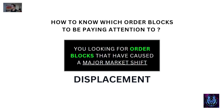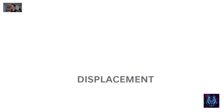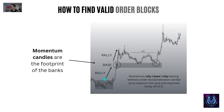You're looking for order blocks that have caused a major market shift — that's called displacement — and this is the secret to finding good quality order blocks. Here we've got a consolidation, then a rally-base-rally: price going up with momentum, basing, and going up with momentum again. This becomes a very strong order block because we had momentum before it and momentum after it. Momentum candles are the footprints of the banks.